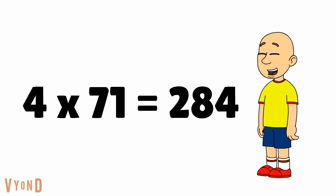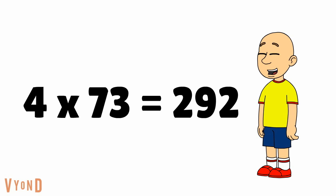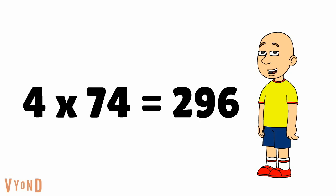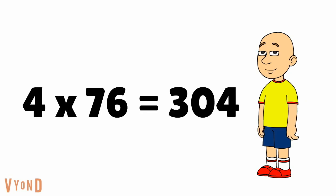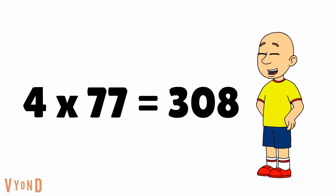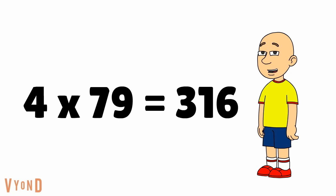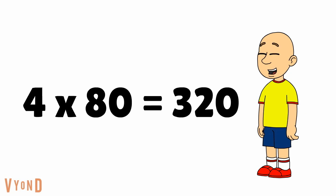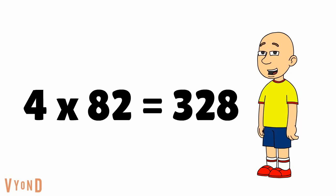4 times 71 equals 284, 4 times 72 equals 288, 4 times 73 equals 292, 4 times 74 equals 296, 4 times 75 equals 300, 4 times 76 equals 304, 4 times 77 equals 308, 4 times 78 equals 312, 4 times 79 equals 316, 4 times 80 equals 320, 4 times 81 equals 324, 4 times 82 equals 328.